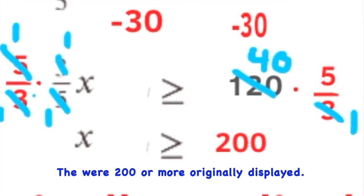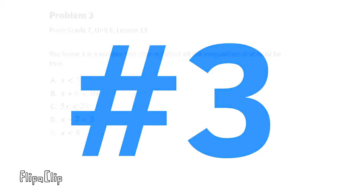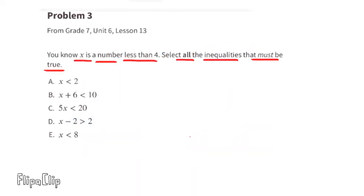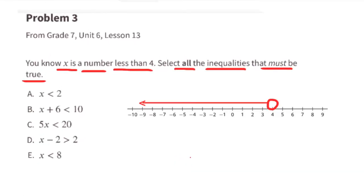Problem number three, from 7th grade Unit 6 Lesson 13: You know x is a number less than four. Select all the inequalities that must be true. Since x is a number less than four, any value less than four could equal x. On a number line, that would be any value to the left of four, not including four.